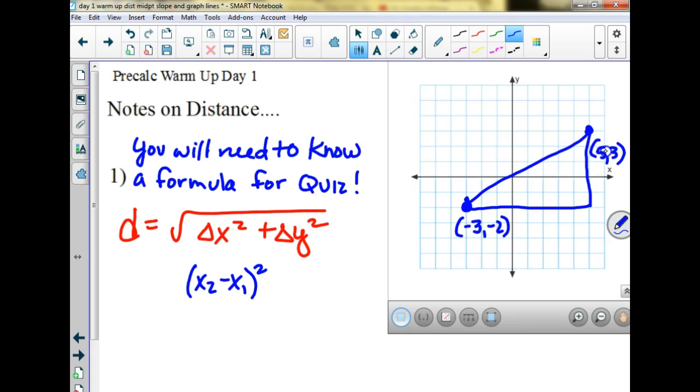So how far across are they on the x's? You probably learned it like x2 minus x1 quantity squared. Does that sound familiar? My head says from negative 3 to positive 5 is 8. Anybody get that? From negative 3 to 0 is 3, then over to 5 is 5 more, that's 8. y2 minus y1. Negative 2 to positive 3 is how far? The y's are here and here. Negative 2 to positive 3. 5.